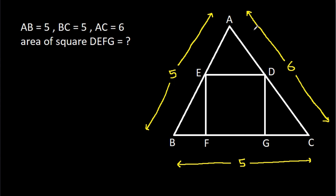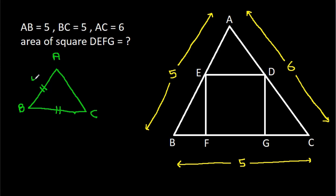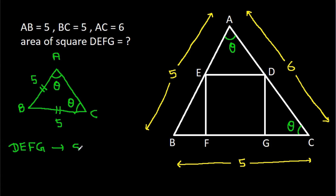In triangle ABC, we have AB equal to BC, that is 5. That means these two angles will be equal — suppose theta. If this angle is theta, then this angle will also be theta. And we know that DEFG is a square.